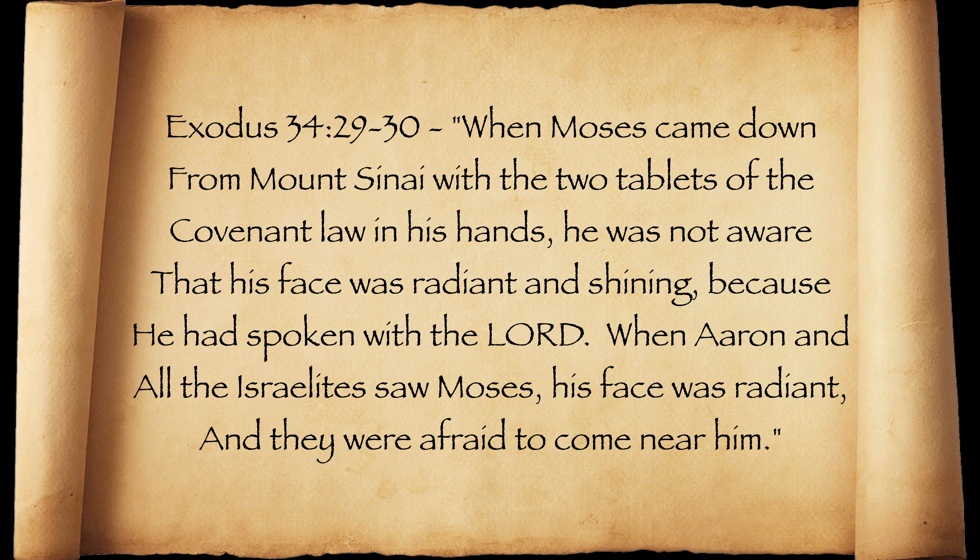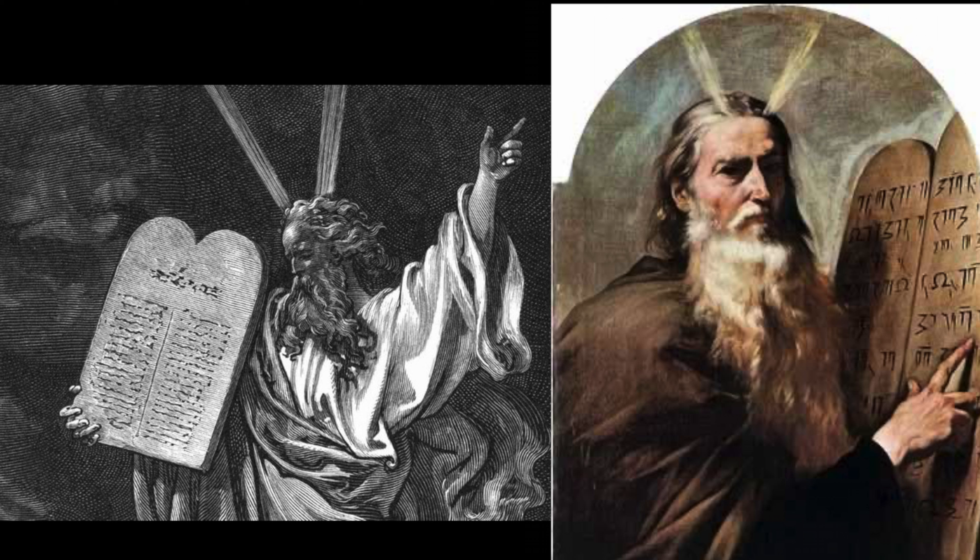Considering the Iliad was written sometime in the middle of the 8th century BCE, this is a pretty early reference to a possible halo. A Jewish example of someone shining as they get close to a divine being can be found in Exodus 34, which says: 'When Moses came down from Mount Sinai with the two tablets of the covenant law in his hands, he was not aware that his face was radiant and shining, because he had spoken with the Lord. When Aaron and all the Israelites saw Moses, his face was radiant, and they were afraid to come near him.' Throughout the centuries, both modern and ancient artists have tried to depict Moses' shining face in various ways — sometimes with beams of light coming out of his head, and at other times with horns coming out of his head. The horns represent the radiance and the glory that shone in his face when he came down from Mount Sinai after talking with God.